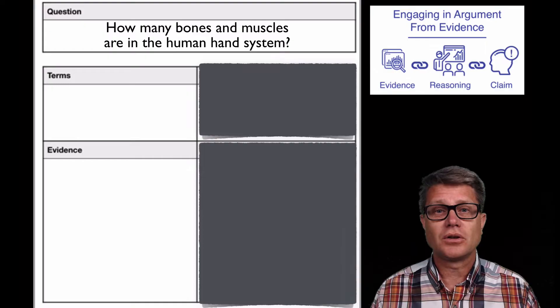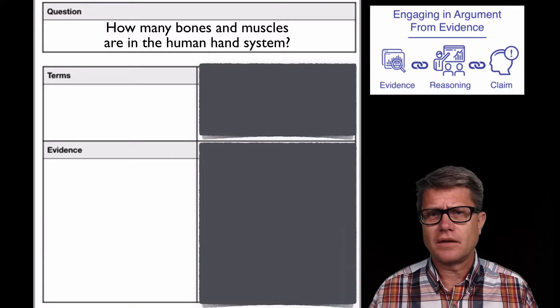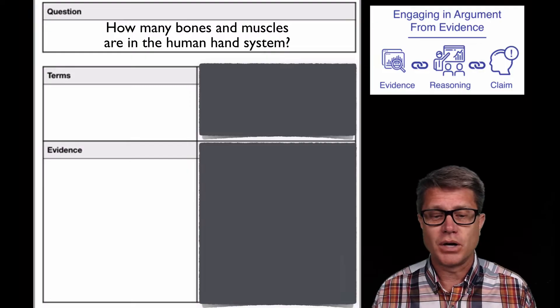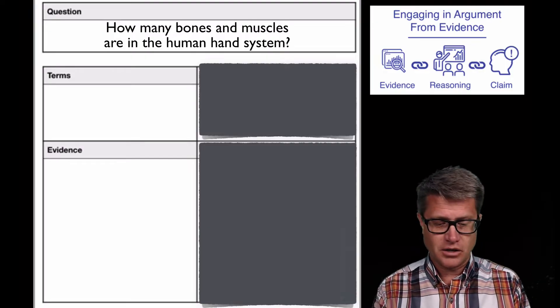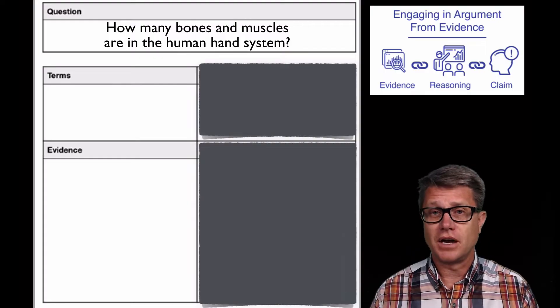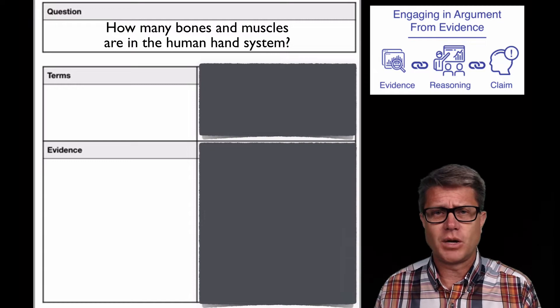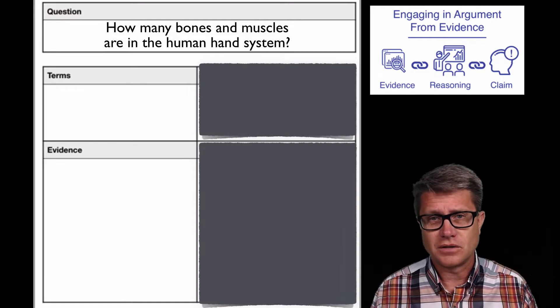Start with some kind of a simple question. You should probably give them the question to get started. And start with a question where we're going to have some kind of an answer at the end. So how many bones and muscles are in the human hand system? You could look at your hand right now and try to determine how many bones or muscles are in there. Now they could quickly Google that and they would learn just arbitrary information, but it would not teach them anything about doing argumentation.